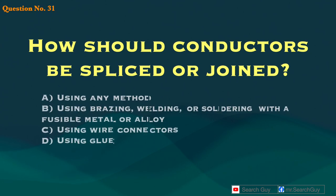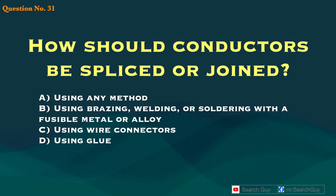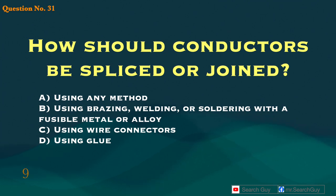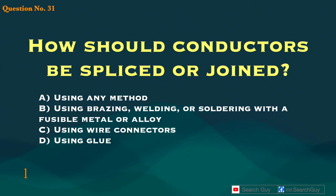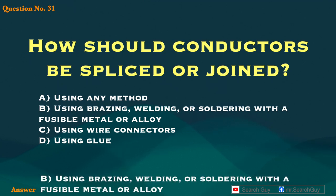Question 31. How should conductors be spliced or joined? A. Using any method. B. Using brazing, welding, or soldering with a fusible metal or alloy. C. Using wire connectors. D. Using glue. Answer: B. Using brazing, welding, or soldering with a fusible metal or alloy.